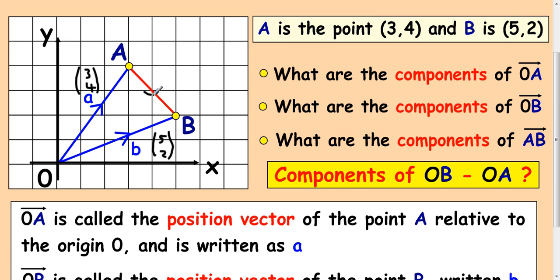Now if you're looking at from A to B, two along and two down, that is A to B: (2,-2). Now can we get this from these two? Well, if you do 5 take away 3, you're going to get 2, and if you do 2 take away 4, you get -2.